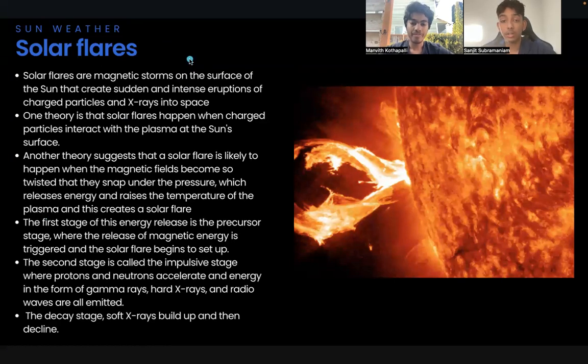The first stage of this energy release is the precursor stage, where the release of magnetic energy is triggered and the solar flares begin to set up. The second stage is called the impulsive stage. During this stage, protons and neutrons accelerate and energy in the form of gamma rays, hard x-rays, and radio waves are all emitted. Finally, in the decay stage, soft x-rays build up, then decline.